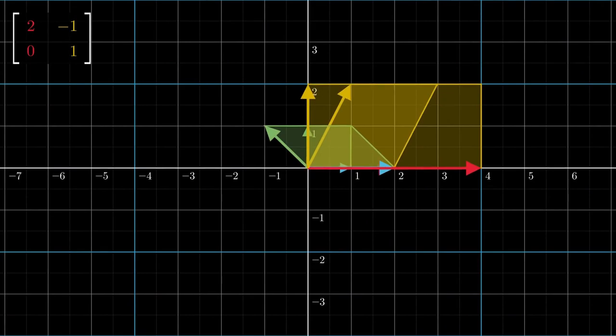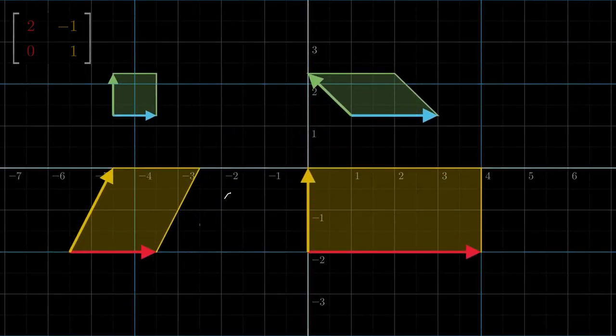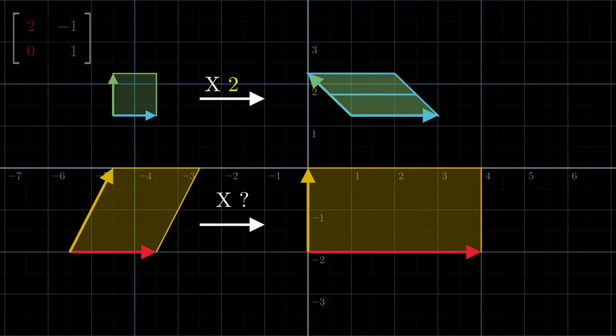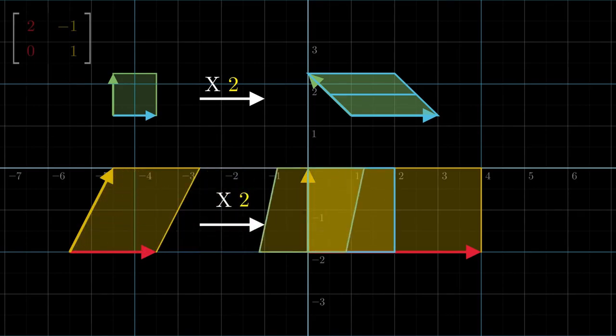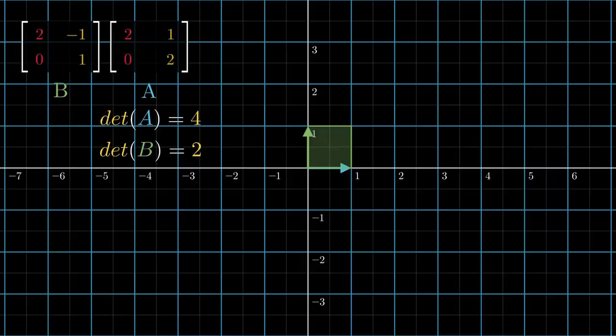During transformation B, the areas swept out by the transforming basis vectors get scaled by some factor. What do you think that factor is? We've already seen that transformation B scales areas by a factor of 2, and linearity is going to imply that any area should get scaled by that same factor, which means that the areas spanned out by the transforming basis vectors also get scaled by that same factor 2.